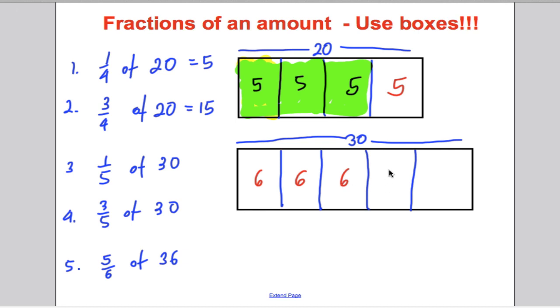So in each box must go six. So if we want one fifth of 30, we want one of those boxes and the answer clearly will be six. And if we want three fifths, we're going to colour in three out of those five boxes and we're going to get ourselves 18.